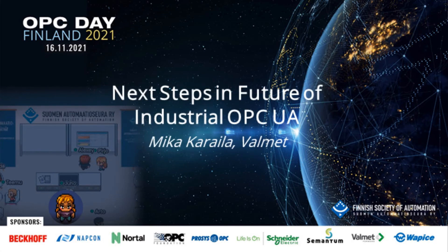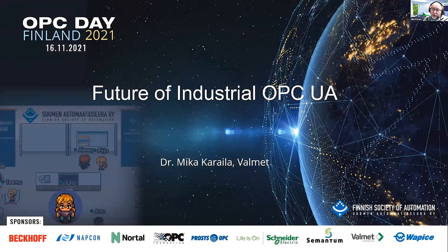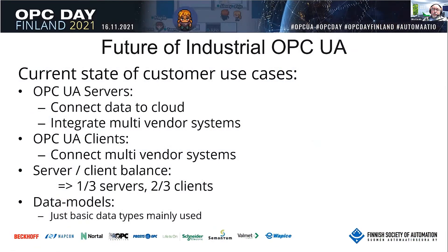I'll talk about the future — how I see OPC UA developing and implementation continuing. The current state is that we are using OPC UA servers, connecting data to cloud, as we've seen today, and integrating multi-vendor systems. Nowadays quite a lot of different clients have been connected to different kinds of servers. The balance seems to be that one third of deployments are servers and two thirds are OPC UA clients.